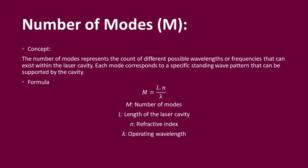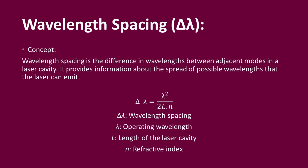The next definition is wavelength spacing. Wavelength spacing is the difference in wavelengths between adjacent modes in a laser cavity. It provides information about the spread of possible wavelengths that the laser can emit. The formula is delta lambda equals lambda squared divided by 2L times n, where delta lambda is the wavelength spacing, lambda is the operating wavelength, and L is the length of the laser cavity.